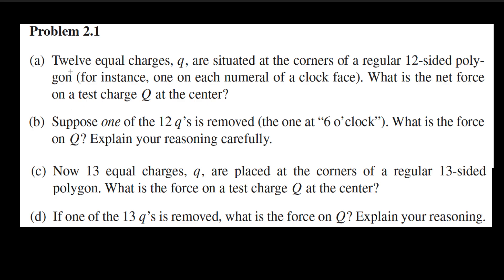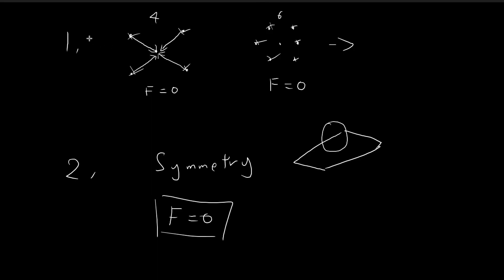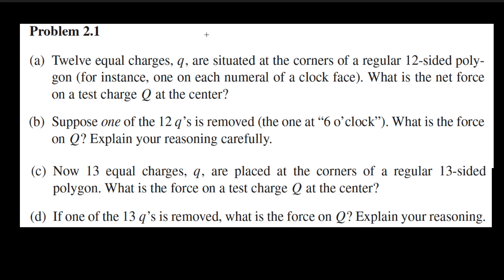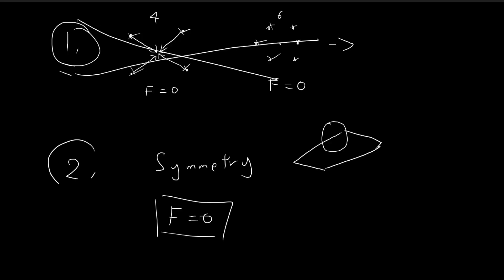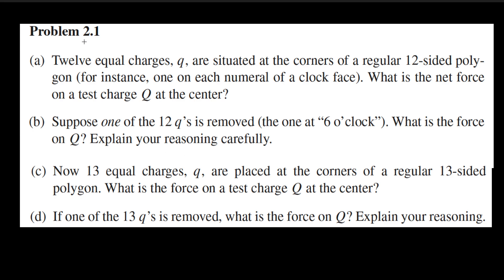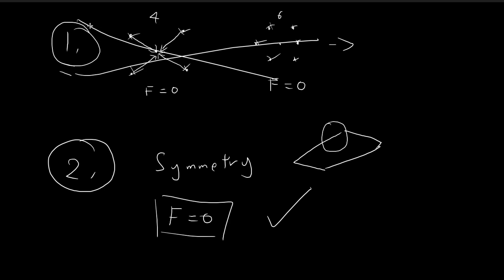In part C, we have something slightly similar to part A, but now we have 13 charges, and we want to find the net force at the center. The first argument does not work since 13 is not an even number — I can't pair off the charges exactly. But the setup is symmetrical, arranged at the corners of a regular 13-sided polygon, so the second symmetry argument does apply. There is no reason why the net force should lean to either side, so the net force is still equal to zero. Note that the first argument does not apply to part C, while the second symmetry argument applies to both part A and part C.